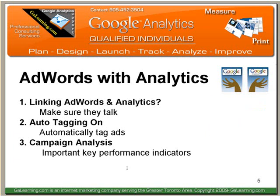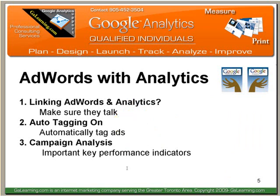Linking AdWords to Analytics — you want to make sure they're communicating properly. The steps are pretty simple, but often overlooked. Turning auto-tagging on when you get into AdWords is one of the simple steps you take. At the end of this, you want to do your campaign analysis through mainly Analytics combined with some AdWords reports — that will give you reporting like you have never seen it before.